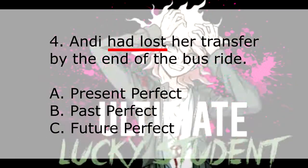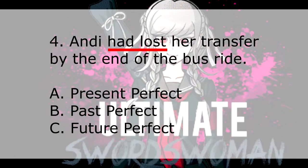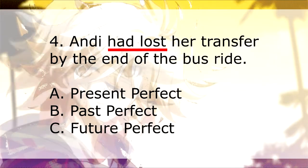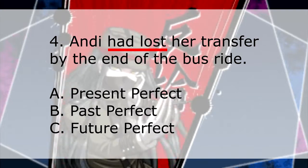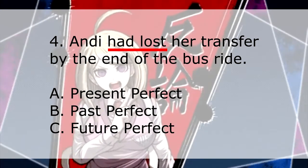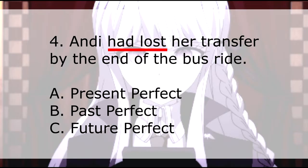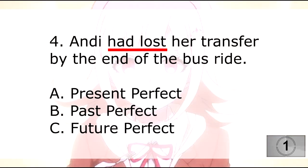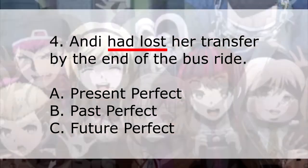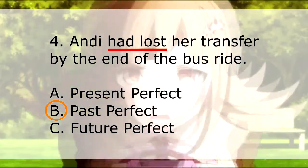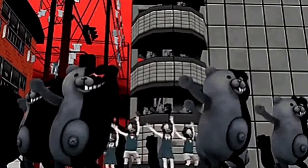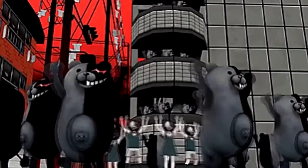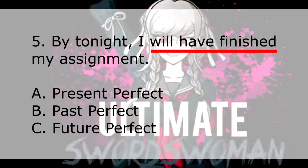Question 4: 'Andy had lost her transfer by the end of the bus ride.' The underlined verb is 'had lost.' What is its perfect aspect? A) present perfect, B) past perfect, C) future perfect? The correct answer is letter B, past perfect.